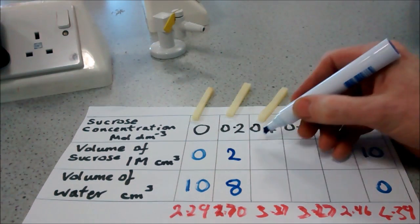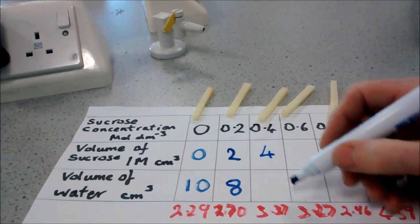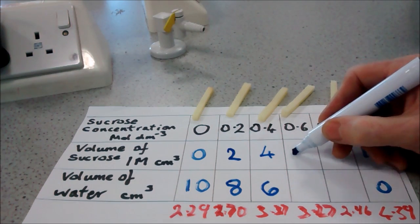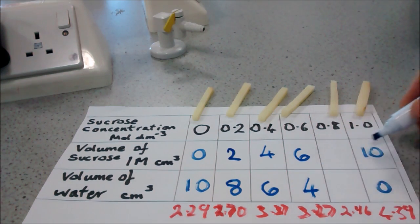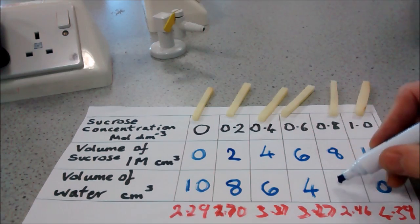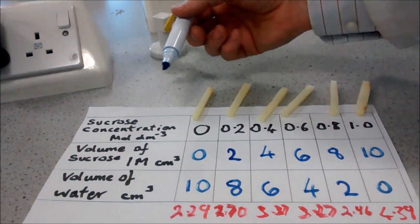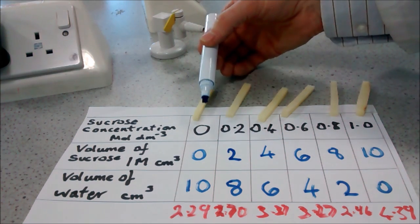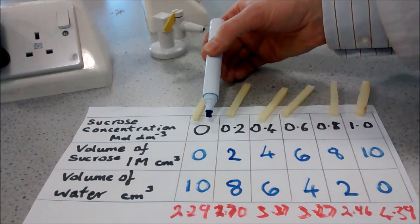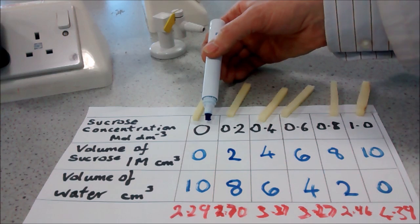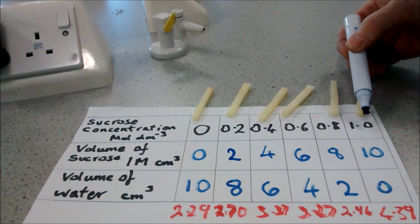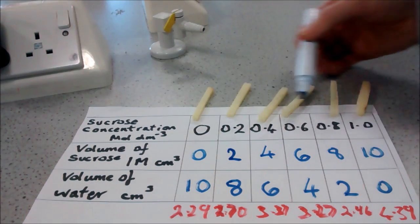Four cubic centimeters with six, six with four, and eight with two of water. That will give us a range of concentrations from distilled water with a water potential of zero, down to a concentrated solution of one molar sucrose, and a range in between.